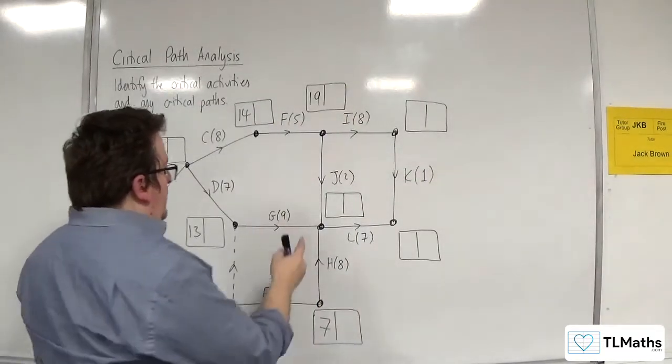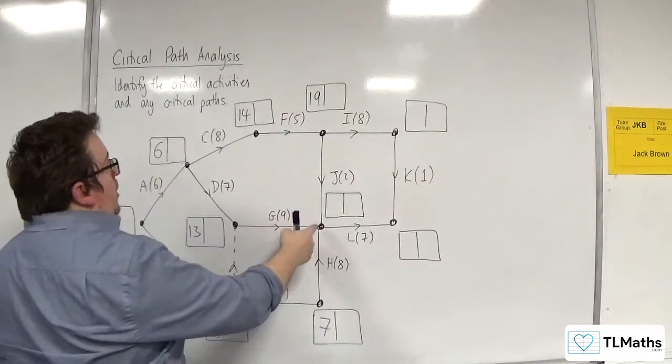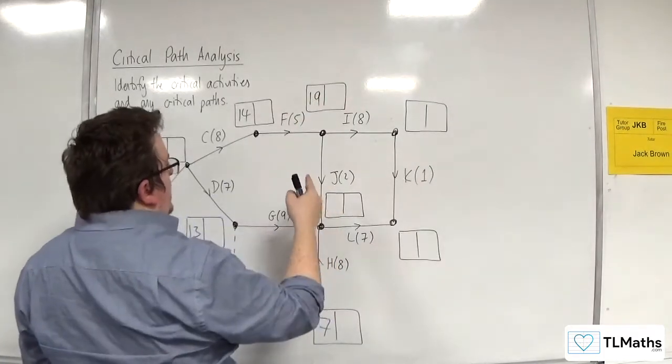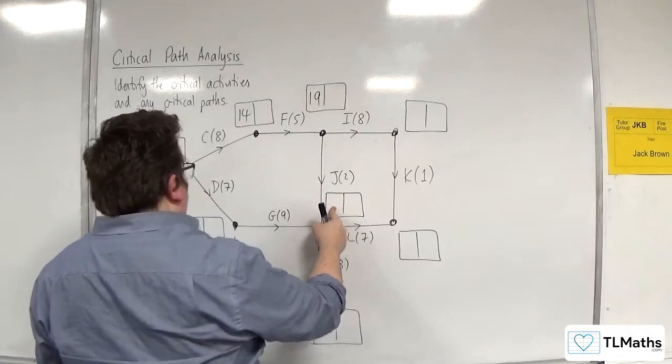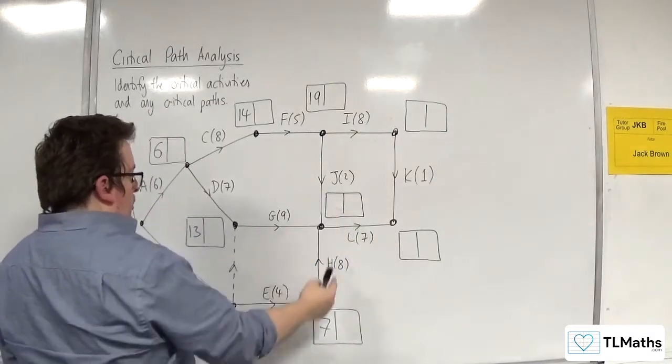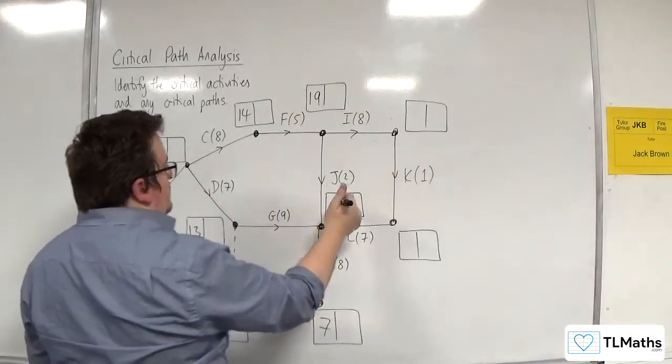So for this one, we've got 19 plus 2, so 21, or 13 plus 9 is 22, or 7 plus 8 is 15, so 22.